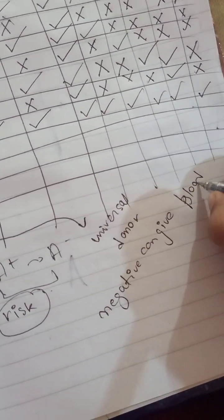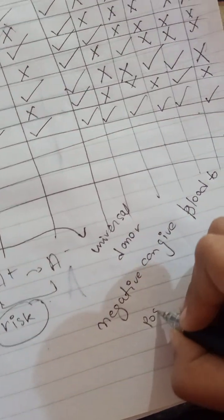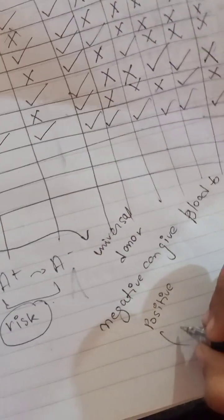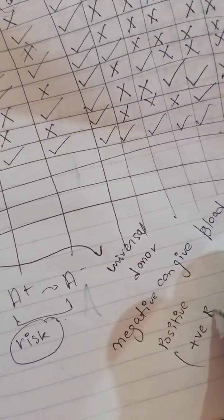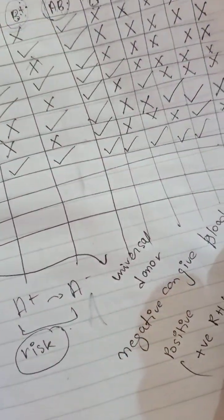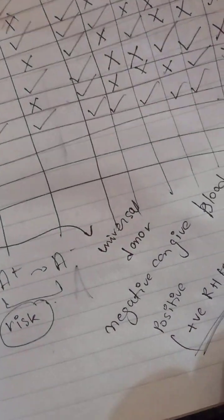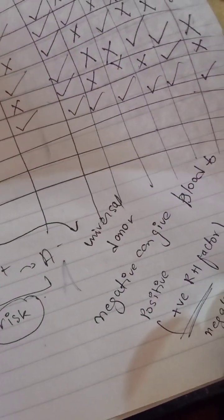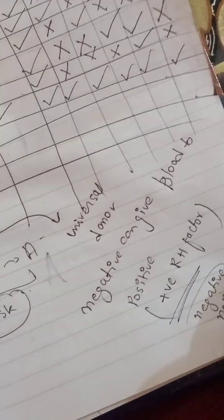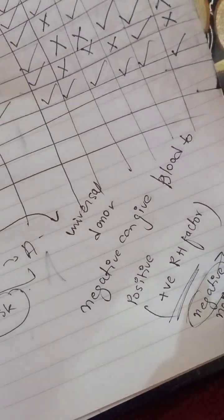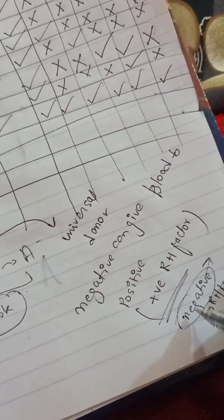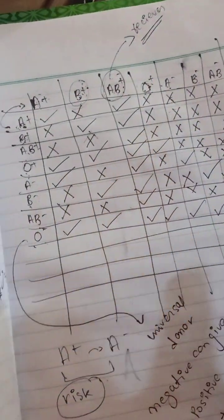Negative can give blood to positive when the RH factor is present in the positive. But if positive gives blood to negative, RH factor antibodies can be developed. That is why positive cannot give blood to negative. This was about the RH factor with the whole table.